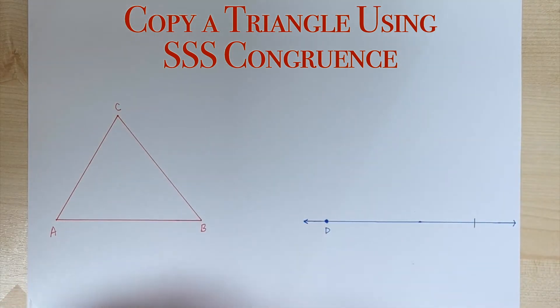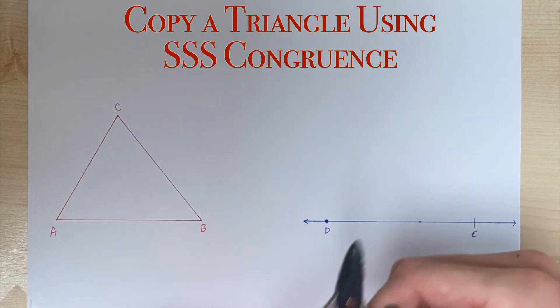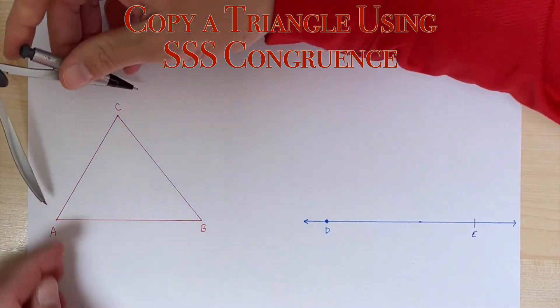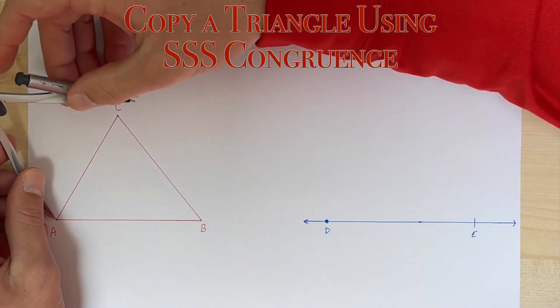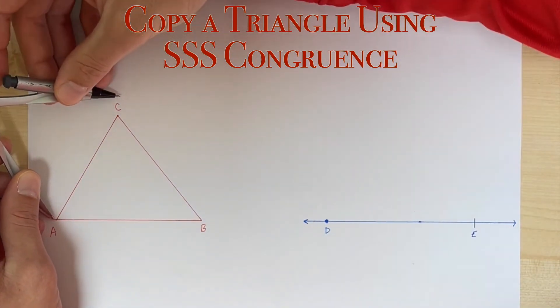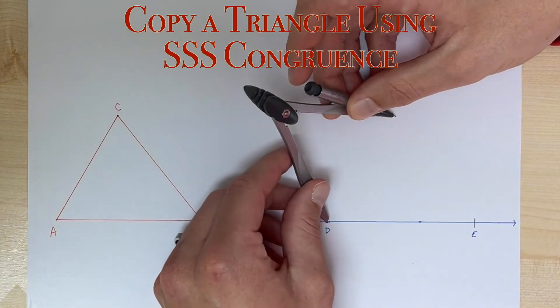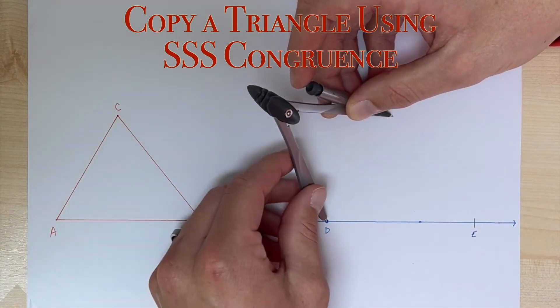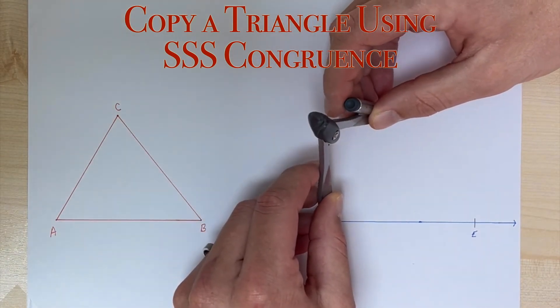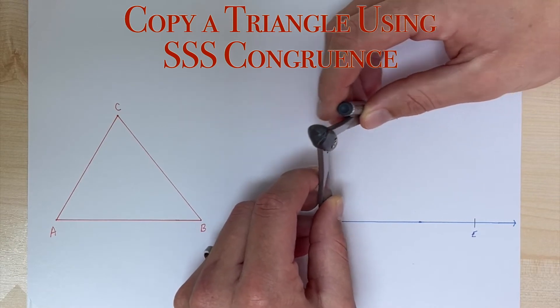All right, so now we're going to open our compass the length of one of the other two sides. I'm just going to do side AC. I know I need to close it down a little bit, so close it down to right there, that looks good. So now I'm going to take the needle and put the needle on D and we're going to make an arc up here at the top.